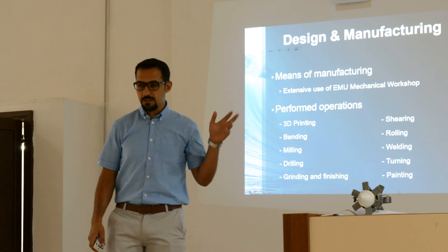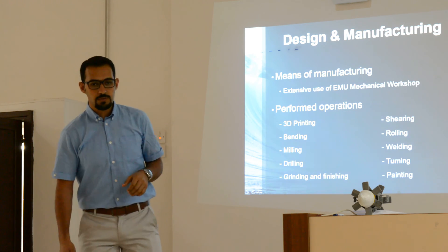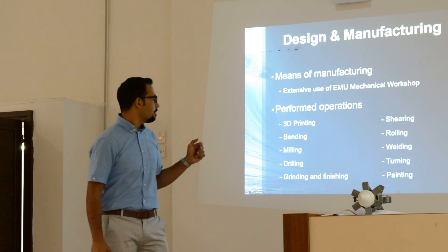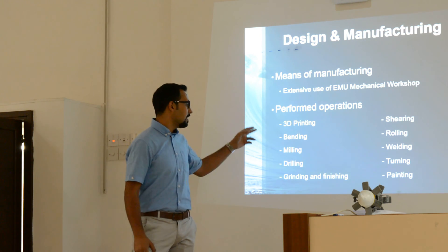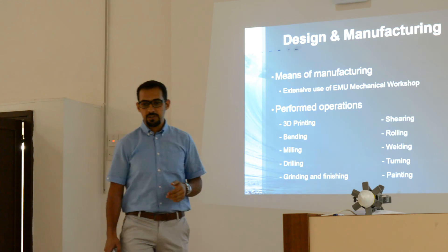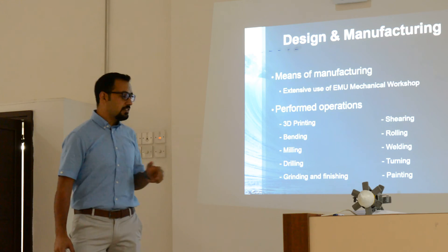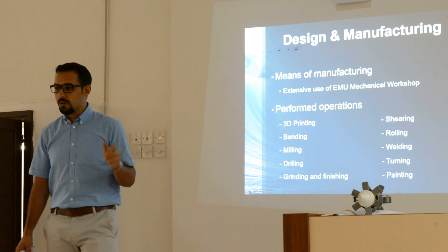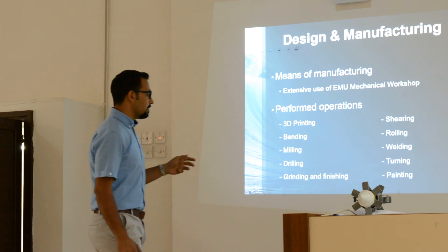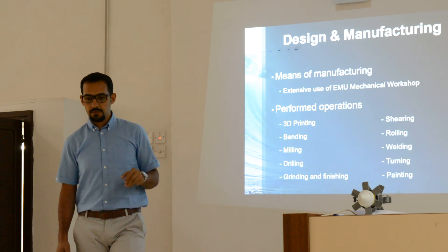Going through the manufacturing processes used to build our prototype: several manufacturing processes were applied, including 3D printing, shearing machine, bending, rolling, and welding. We used manual metal arc welding, dark welding, and spot welding. We also used a turning machine, grinding machine, and surface finishing.